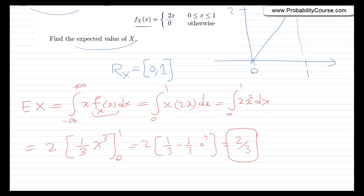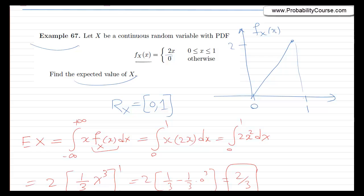Now if you think about it, it makes sense. The range of X is all values from 0 to 1, and the midpoint is 0.5. The pdf is larger around 1, so it's more likely that X is closer to 1 than to 0. So we expect the expected value — the average of X — to be larger than 0.5, and that's exactly what we found: 2/3, which is closer to 1 rather than to 0.